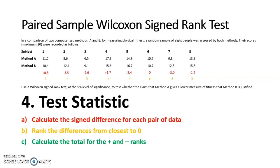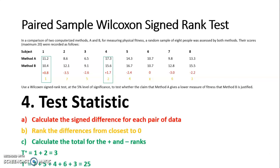Step three is to calculate the total for the positive and negative ranks. I highlight the positive ranks to differentiate them — ranks 1 and 2 — giving T+ a total of 3. The negative ranks are 7, 5, 4, 6, and 3, which add up to 25. Step four: the test statistic is the smallest of the rank totals, so for this question it is 3.